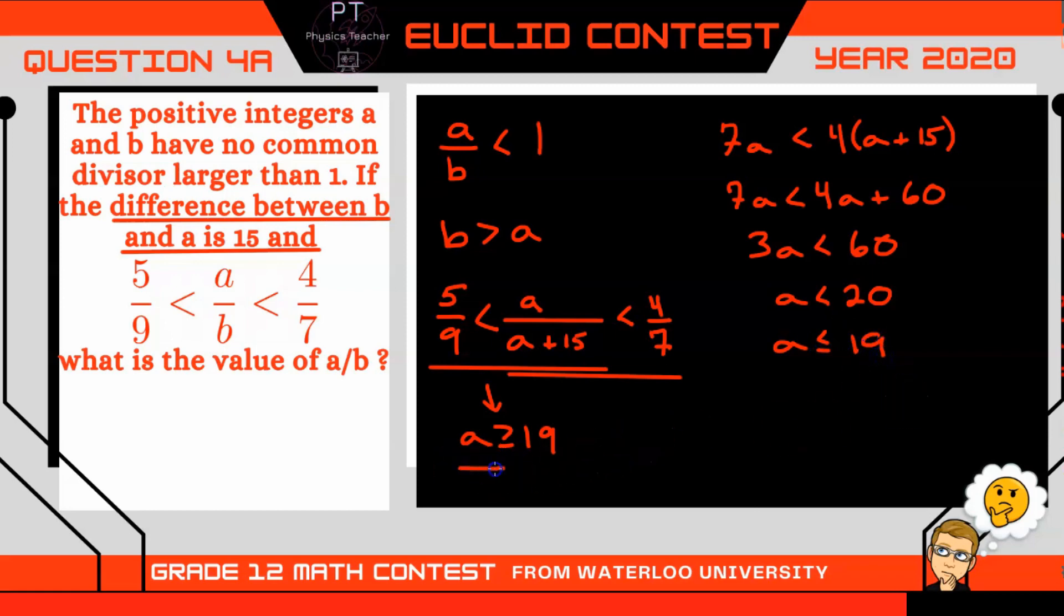Well, if A must be greater than or equal to 19, and A must be less than or equal to 19, that means A must be 19.